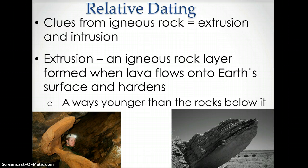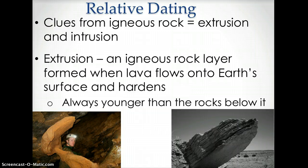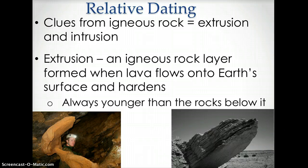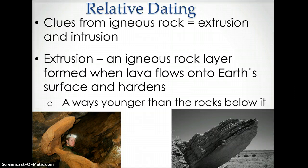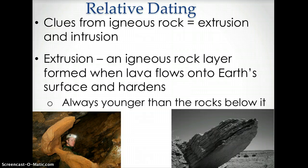Clues from igneous rock can help scientists to date rock. Igneous rock is formed through the cooling and solidification of magma or lava. Two clues that scientists use are extrusions and intrusions. An extrusion is an igneous rock layer formed when lava flows onto Earth's surface and hardens. An extrusion is always younger than the rocks below it. The images demonstrate extrusions. A hint to remember this is that an exit is a way out, and an extrusion goes out of the rock.